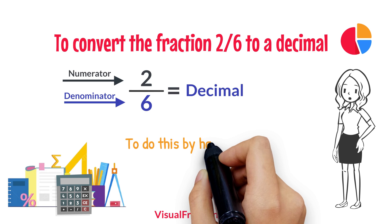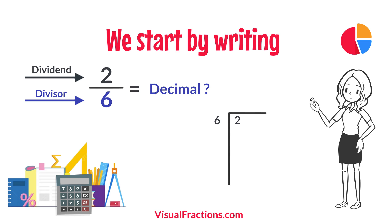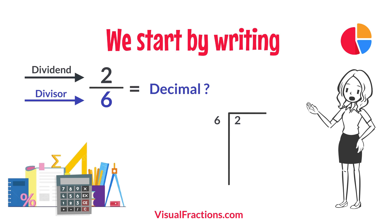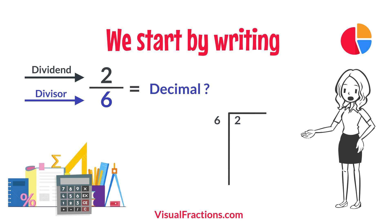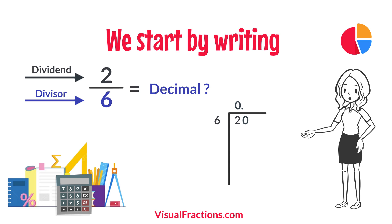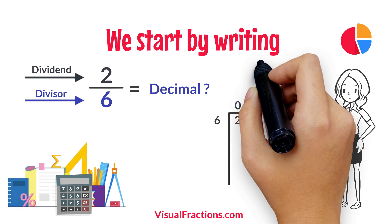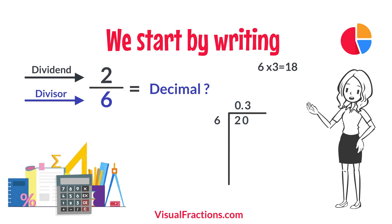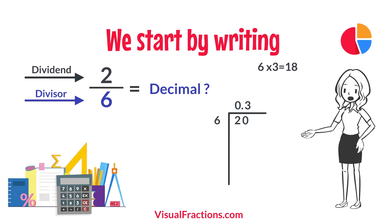To do this by hand using long division, we start by writing 2 as the dividend and 6 as the divisor. Since 6 doesn't fit into 2, we add a decimal point in our answer and append a 0 to 2, making it 20. How many times does 6 go into 20? Exactly 3 times. We write 3 after the decimal point in the quotient.